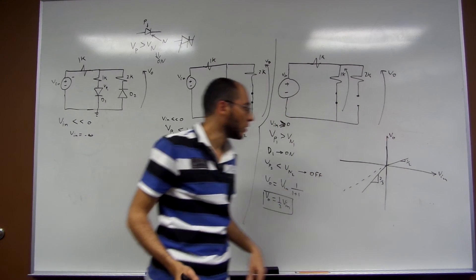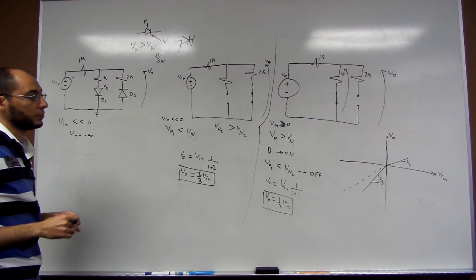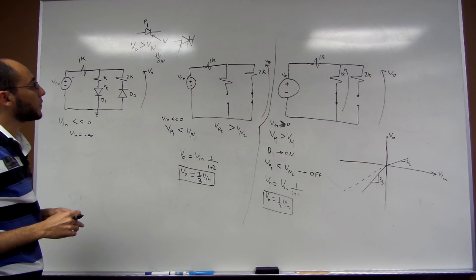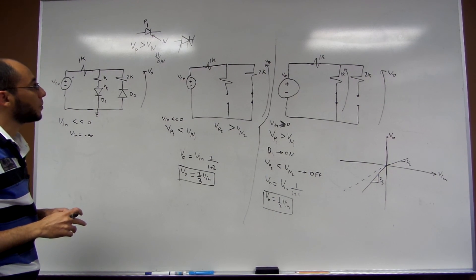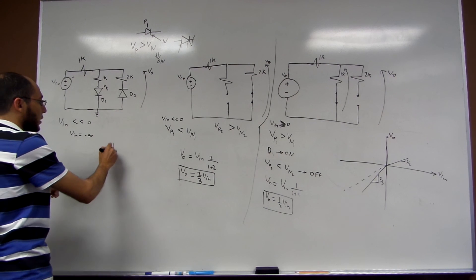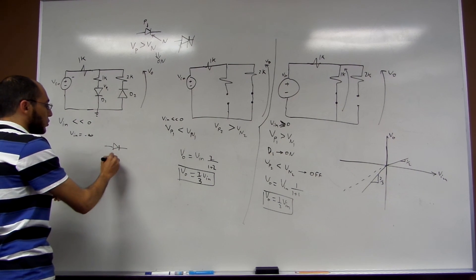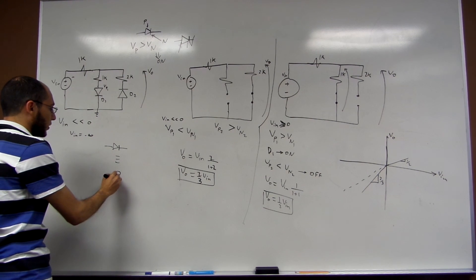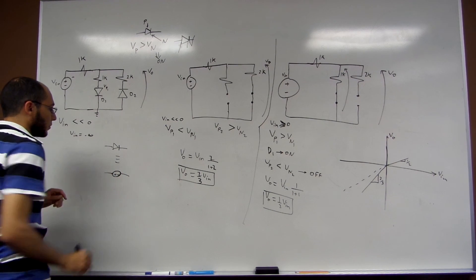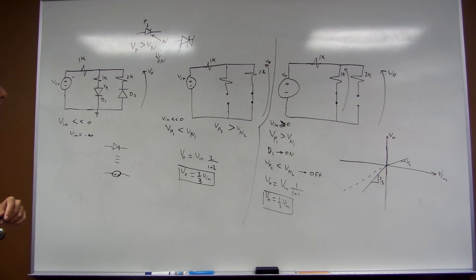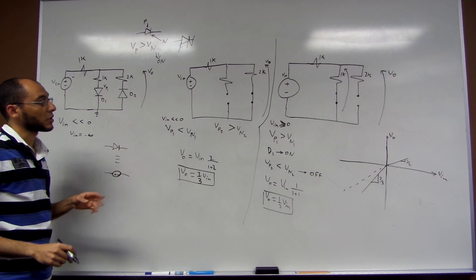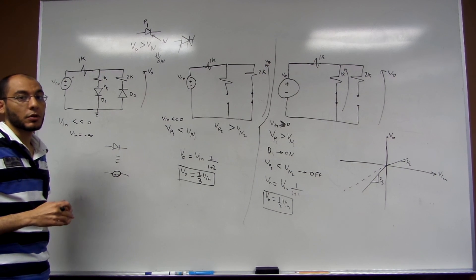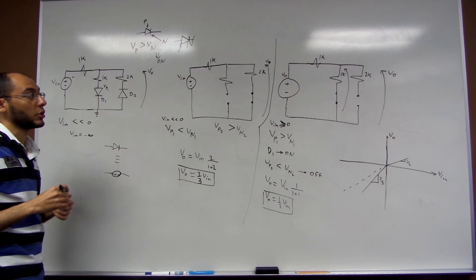If you want to solve it using the constant voltage drop model — where the diode is equivalent to a battery — it becomes more difficult, but it can still be solved using the same constants. If you have any questions, please let me know.